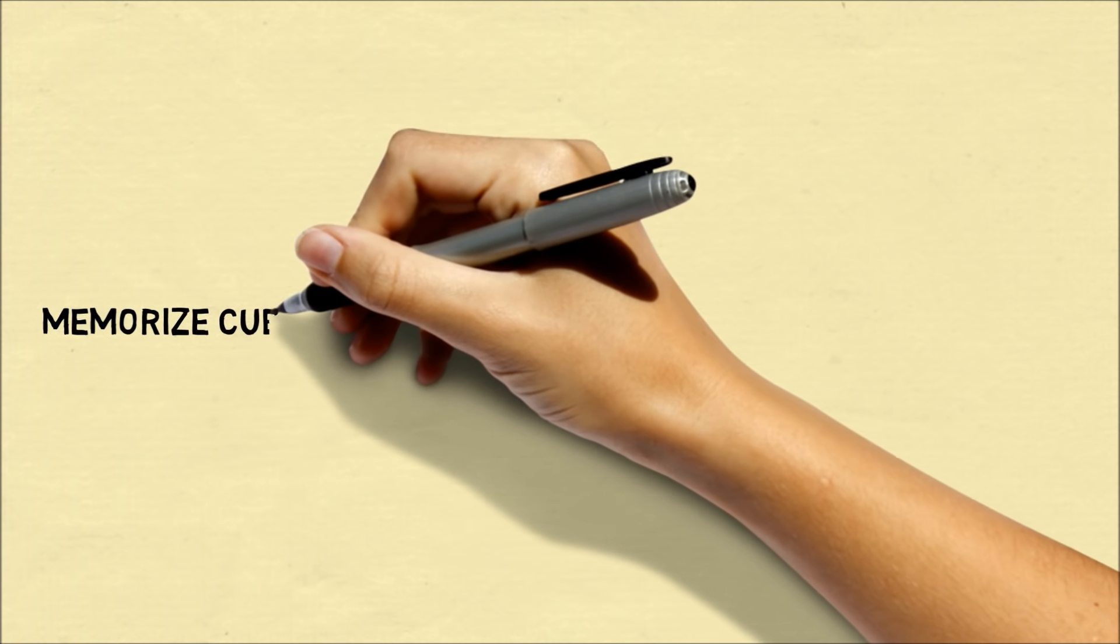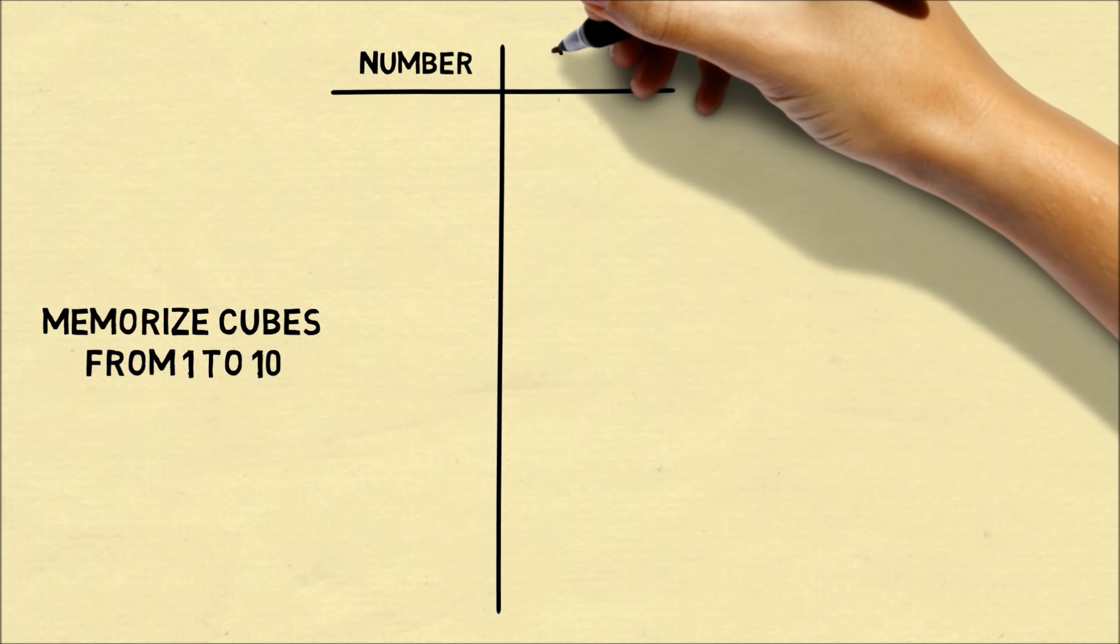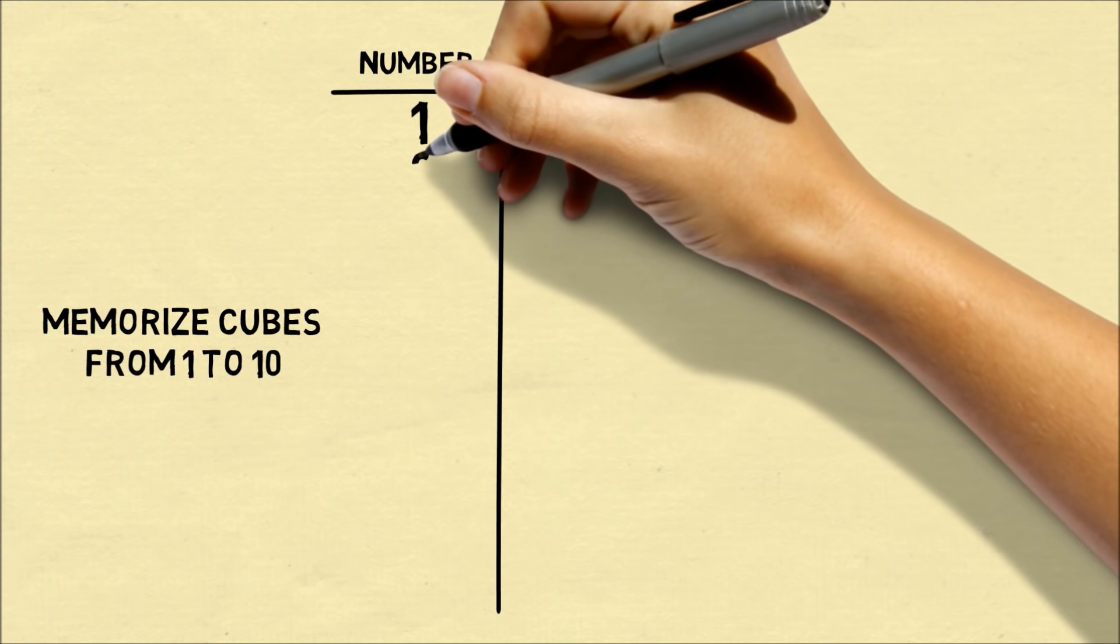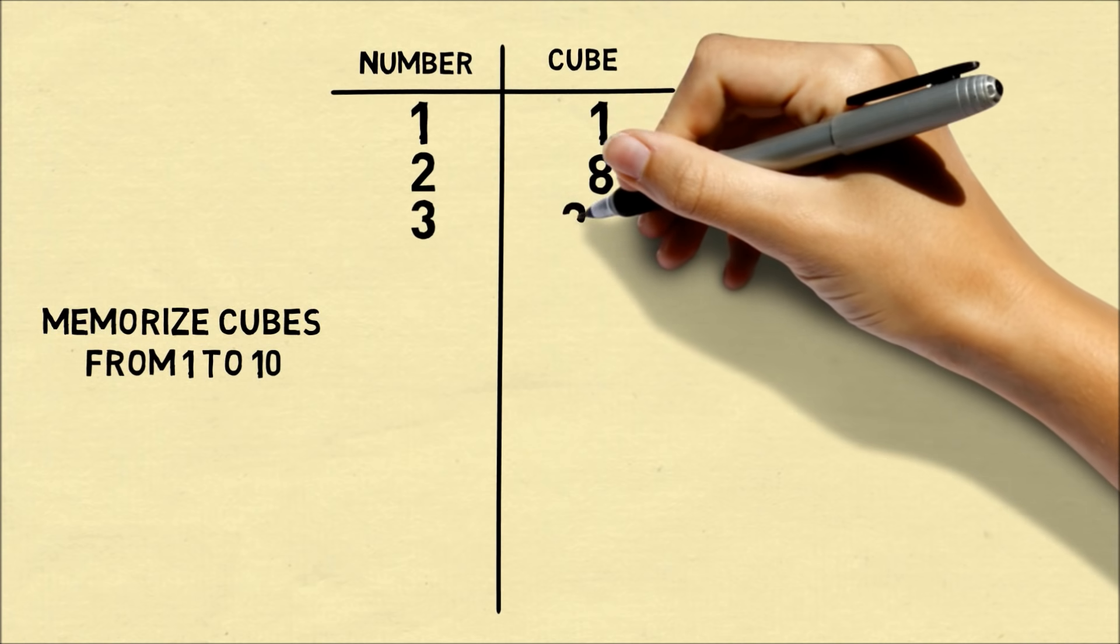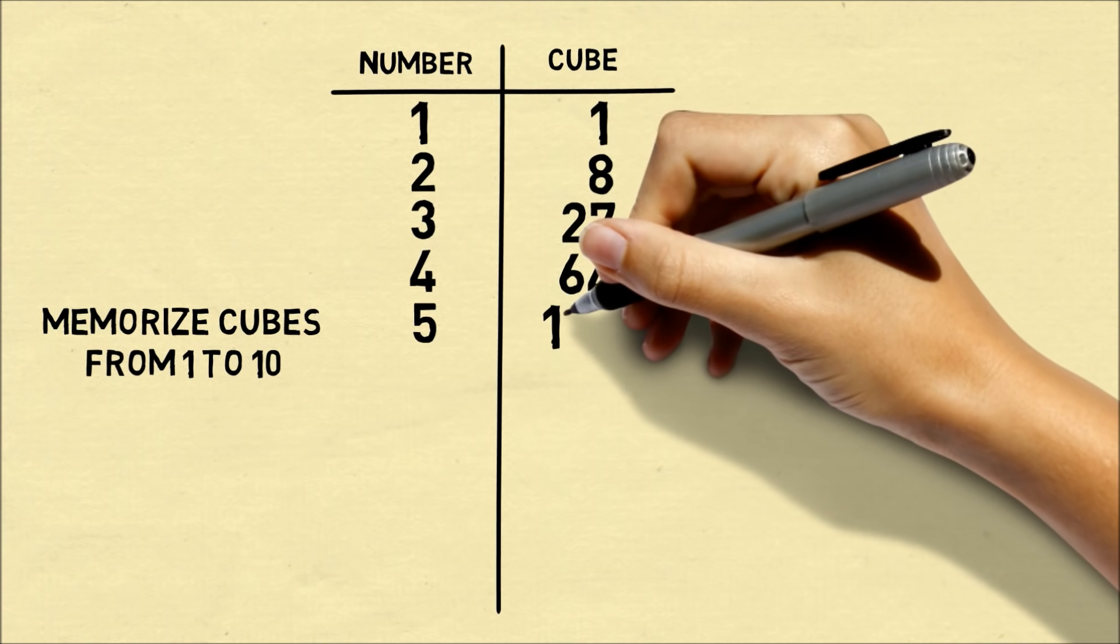So to do the trick, you first have to memorize the cubes of each number from 1 to 10. The cube of a number is the number multiplied by itself three times. So the cube of 1 is still 1, the cube of 2 is 8, the cube of 3 is 27, and I'm going to keep writing the cubes of each number.